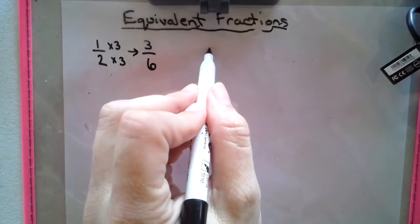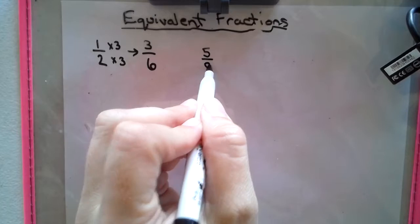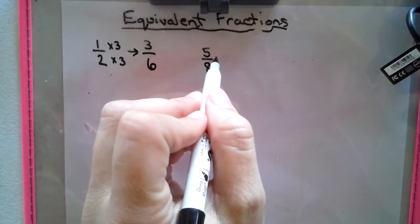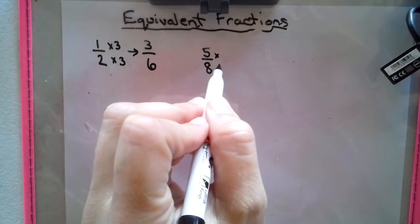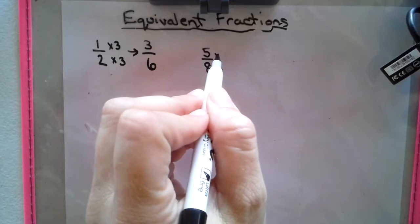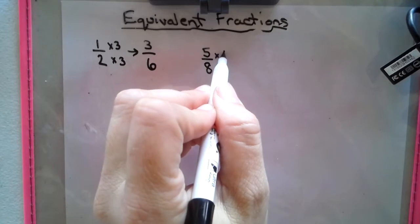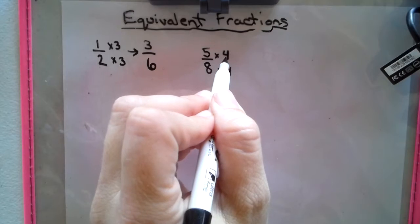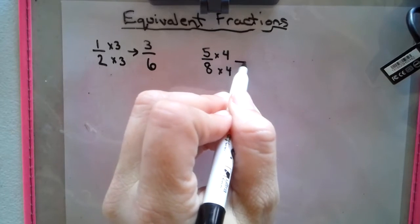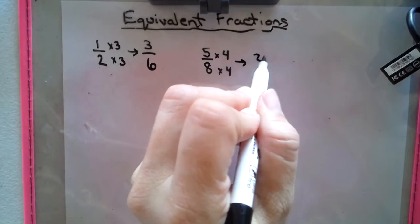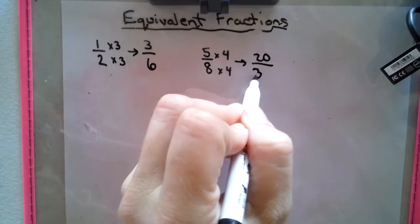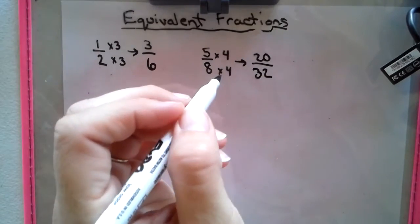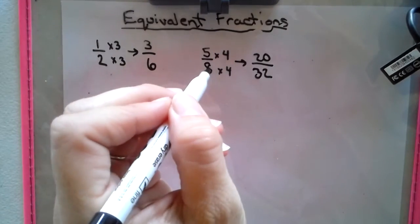So let's say we have 5/8. I can pick any number I want and multiply the numerator by it and the denominator by it, say 4. Whenever I do the numerator, do to that denominator. New equivalent fraction, 20/32. These are equivalent fractions.